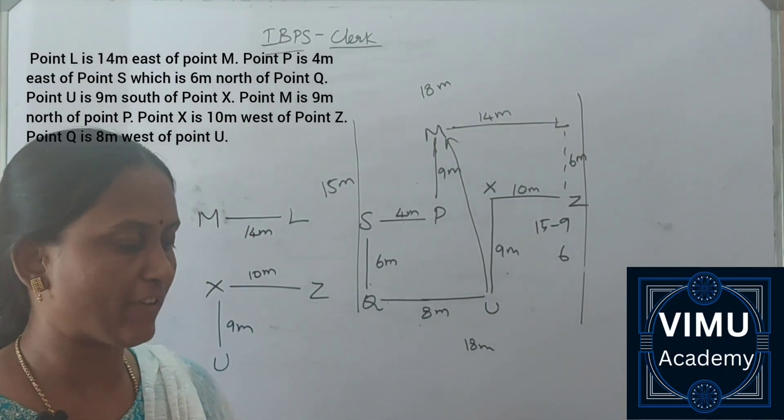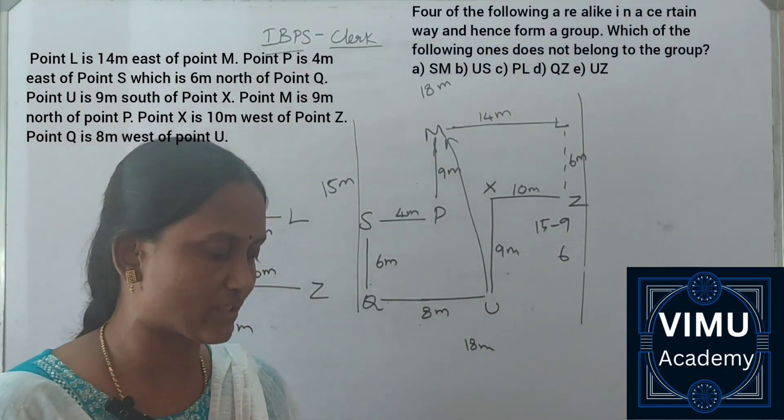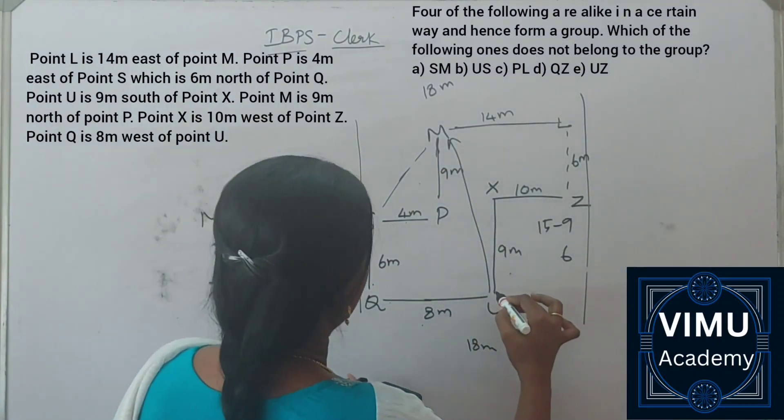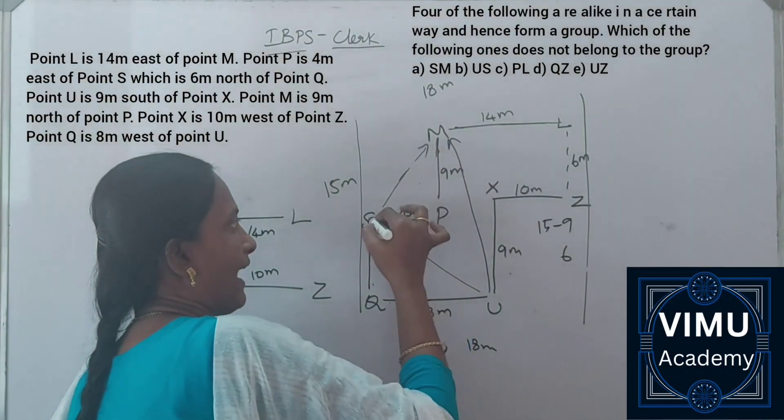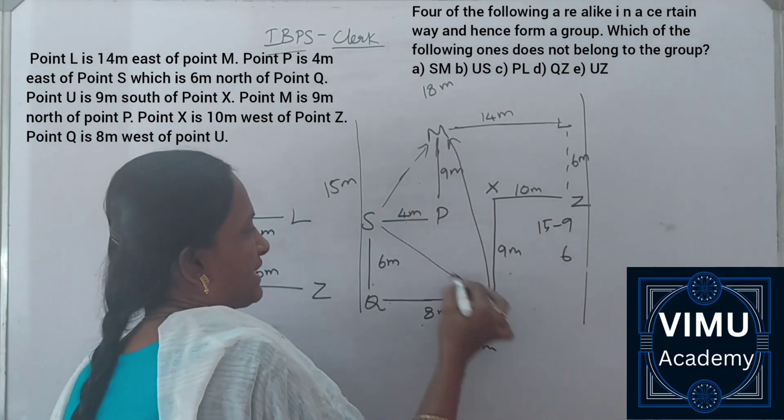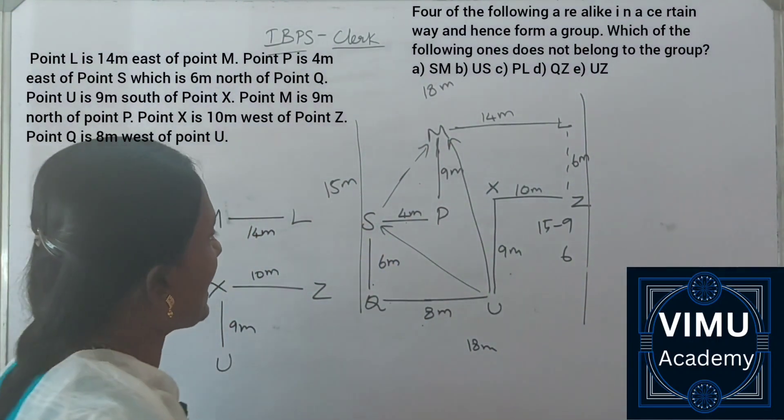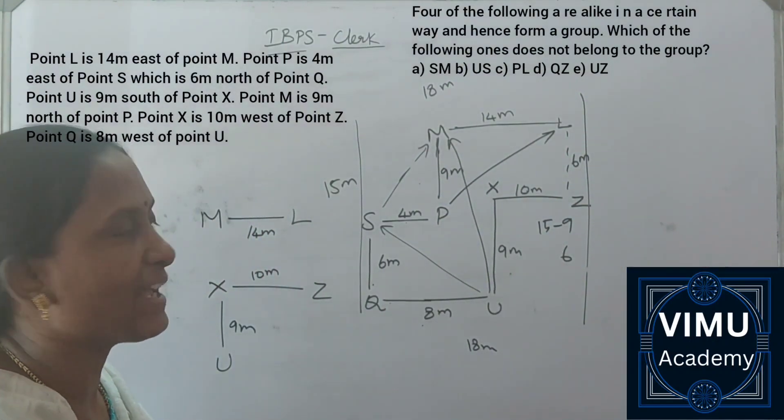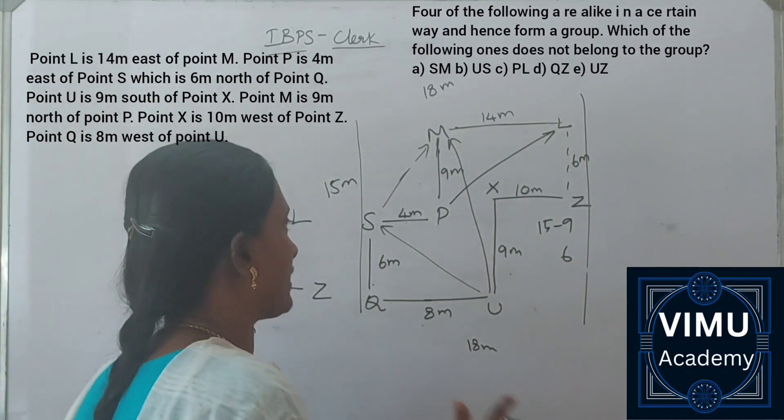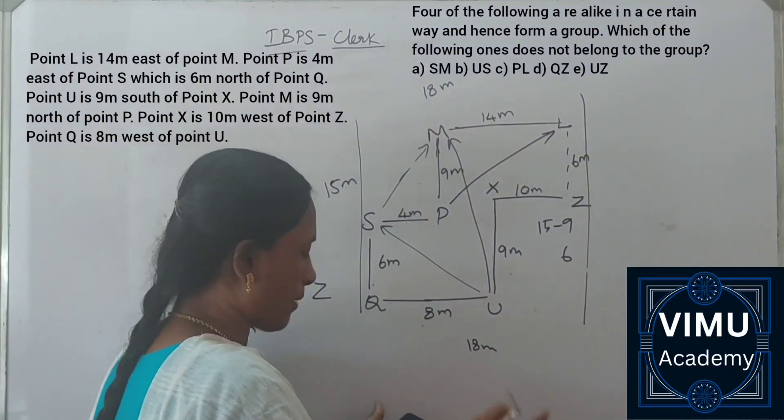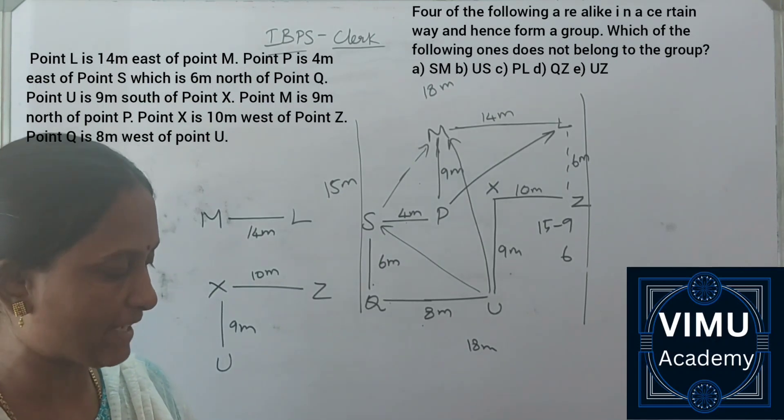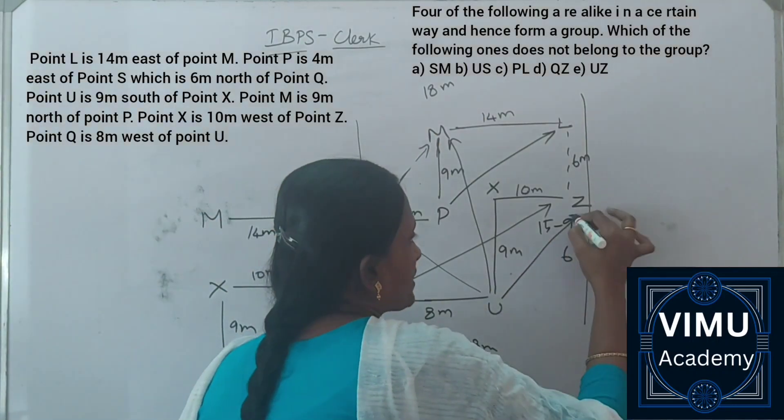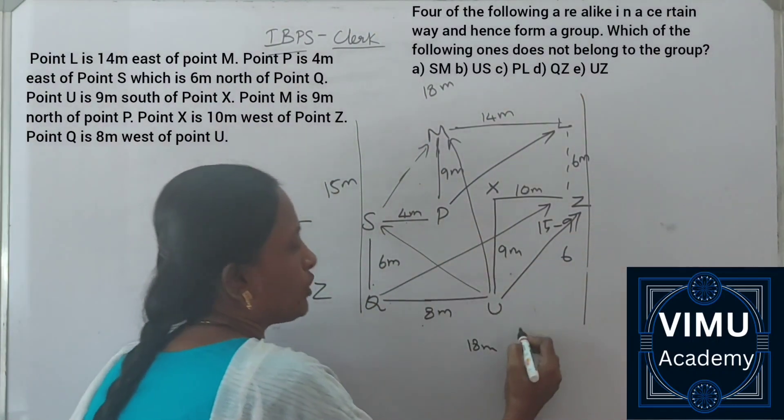Third question: Four of the following five are alike and form a group. Which one does not belong? First option SM is in this direction. US is in this direction. Third option PL goes north, then northwest - this is a different direction. This is the one that's different. Option B is your answer, UZ. That is north direction.